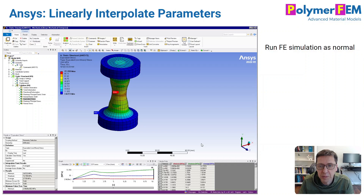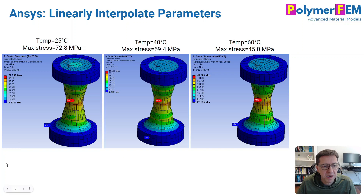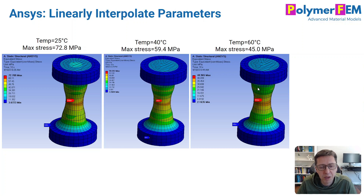Using the calibrated material model at each temperature, I ran a simple simulation in ANSYS. I took a dog-bone shaped specimen, pulled it out a little bit, and repeated this at three different temperatures without changing the material model. The results show that the PETG material undergoes necking significantly, and the stress goes down with temperature as it should. So this is a quick check that the results make sense.